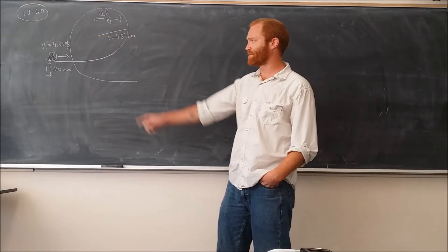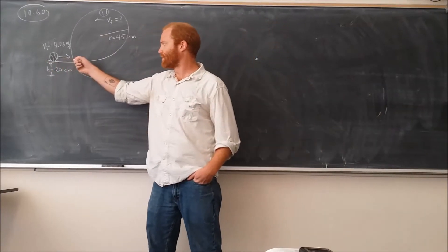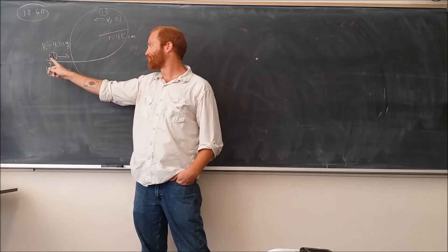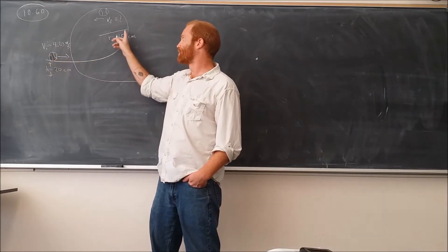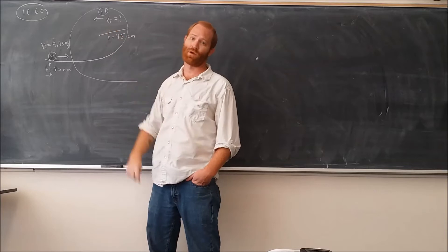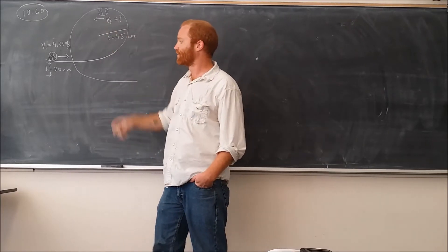This problem involves a tennis ball that's being run in this direction with a speed of 4.03 meters per second. It rolls to the top without slipping up to the top of here. And the first thing we need to find is what is the velocity right here at the top.